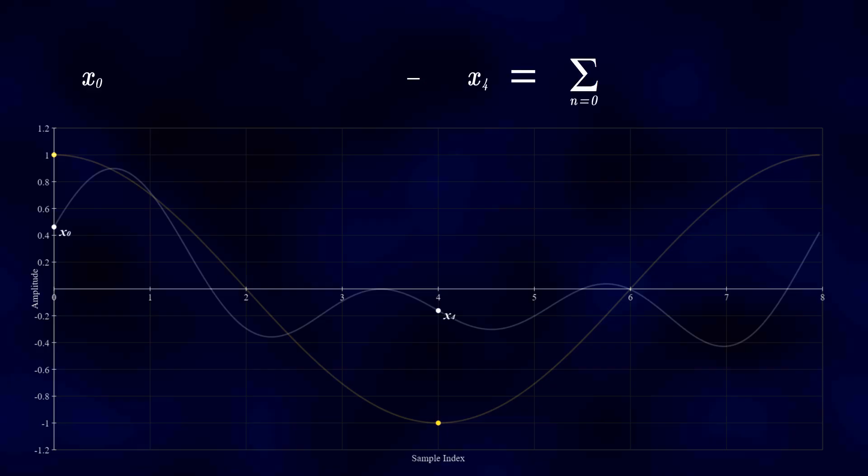When we sum these results, the negative sign ensures that we are effectively computing the difference between the two samples.